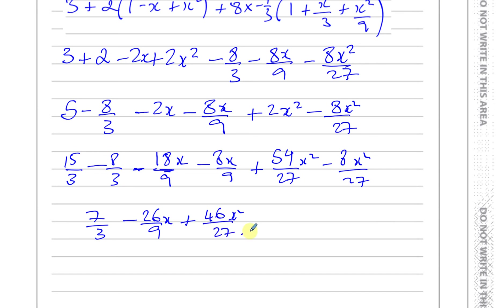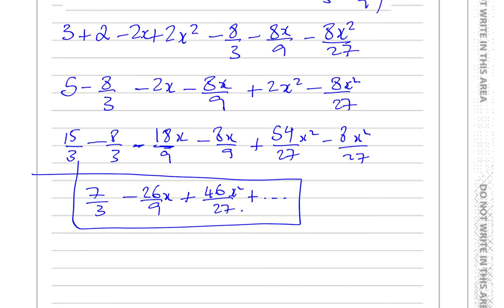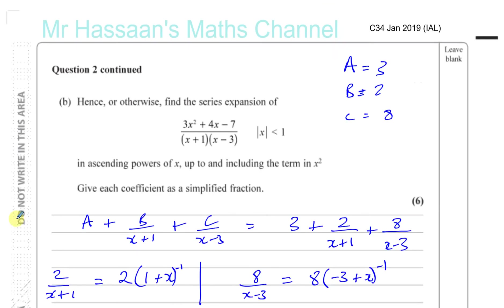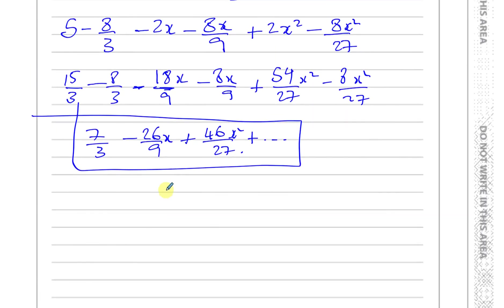There we have our answer to the expansion. Each coefficient should be given as a simplified fraction — checking: no number goes into 7/3, 26/9, or 46/27. Confirming: 54 - 8 = 46, -18 - 8 = -26, and 5 - 8/3 = 7/3. All correct. Thank you for watching.